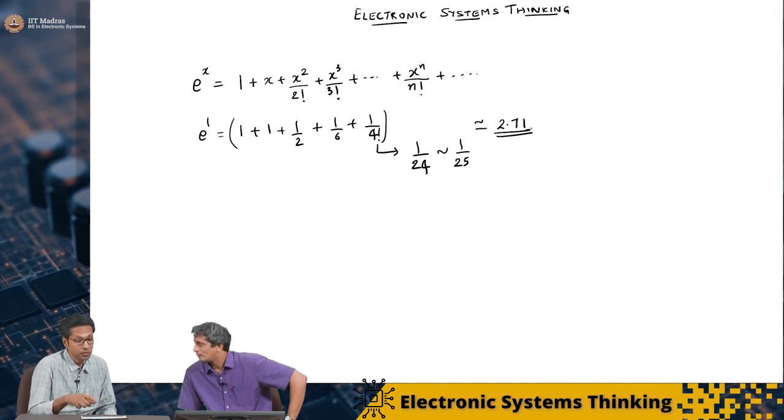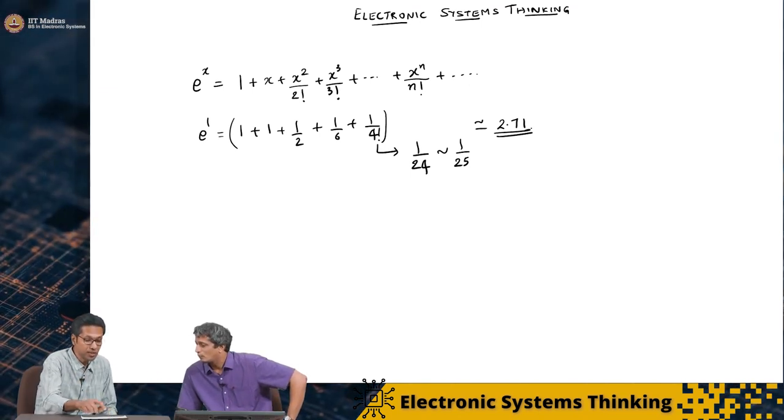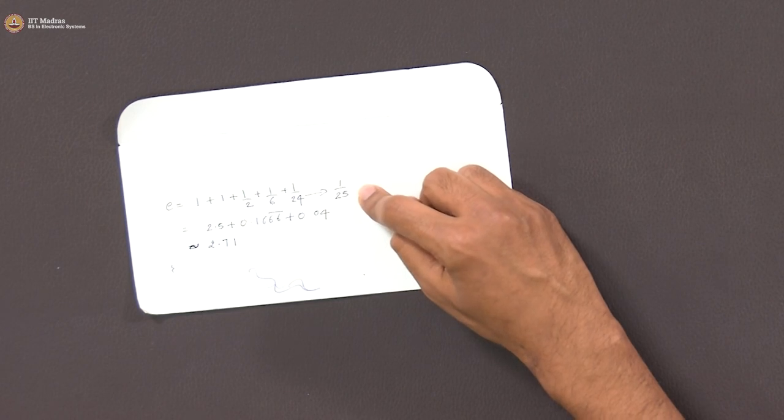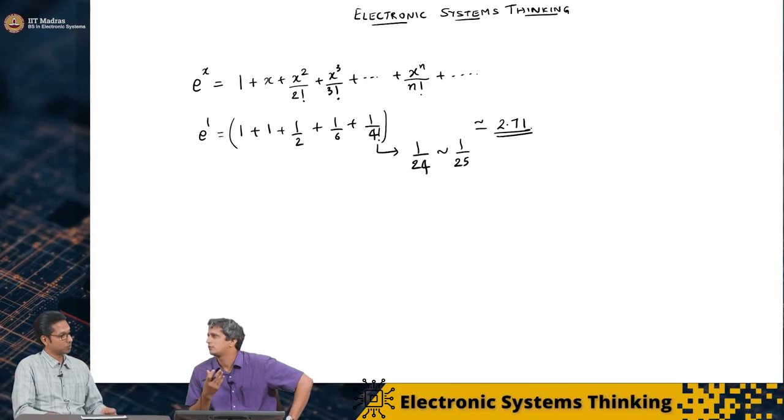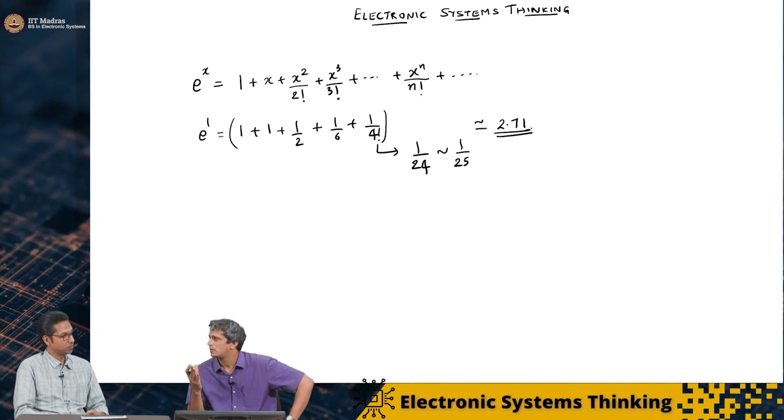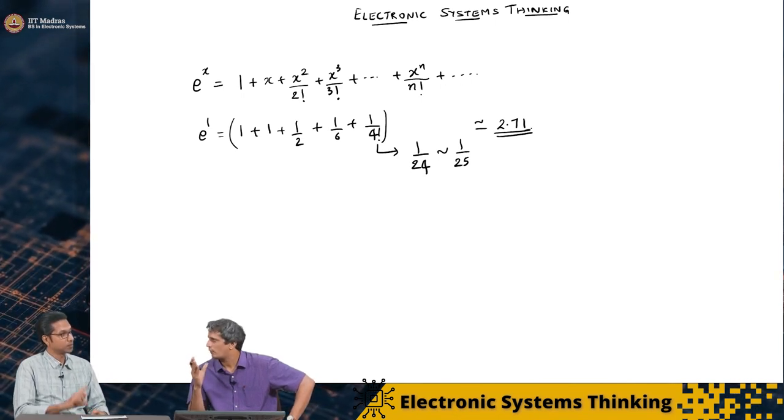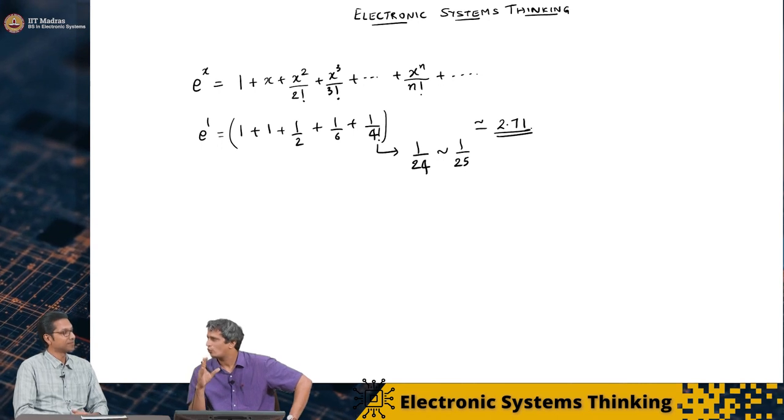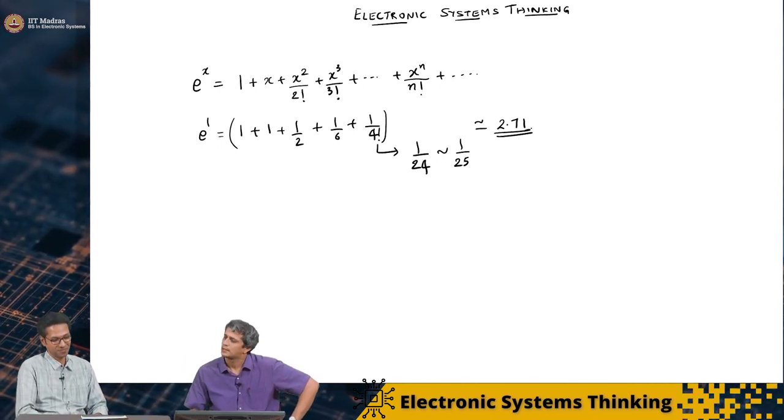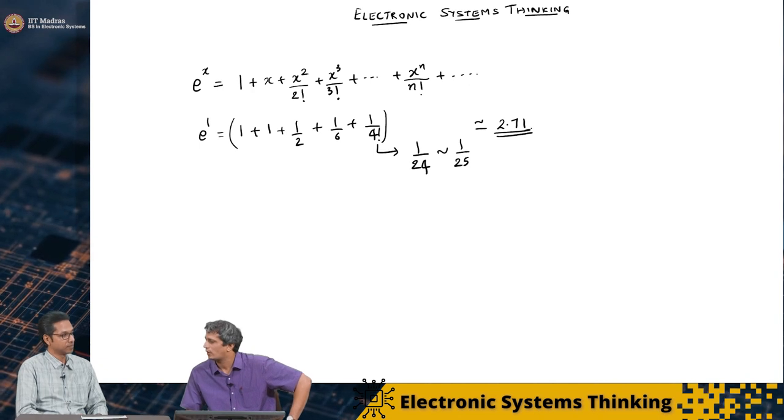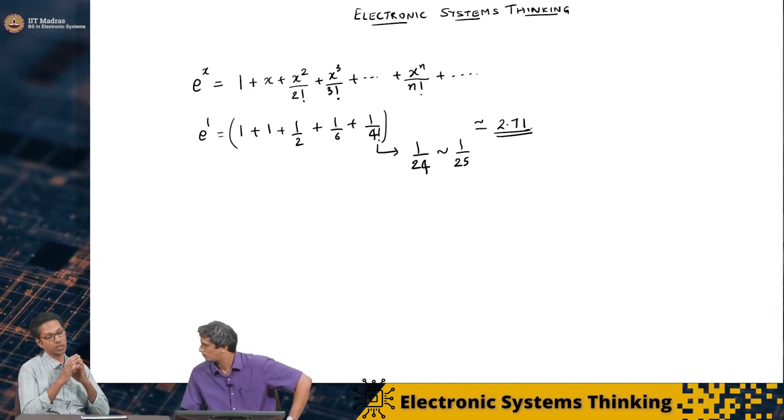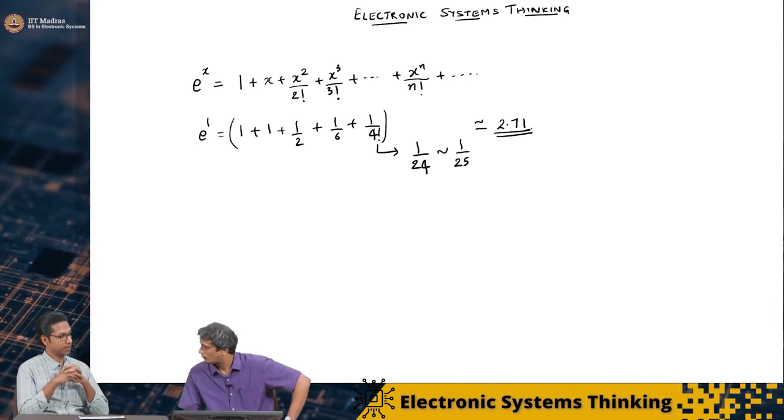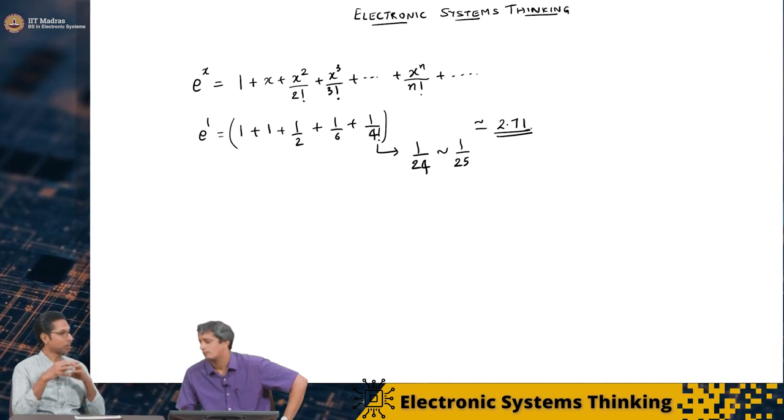So if the requirement was one more digit, then you would have added one more. I would have added maybe a couple of more terms, because 5 factorial is division by 100, 6 factorial is about 720. So I would have to go about 2 or 3 terms more. But I would have got the answer to whatever accuracy you needed. That is how we make approximations depending on the requirement.